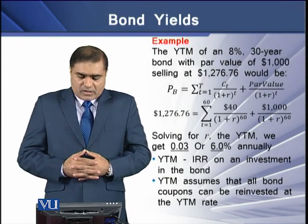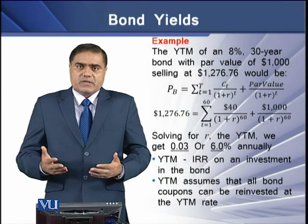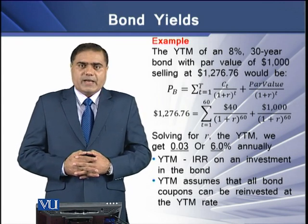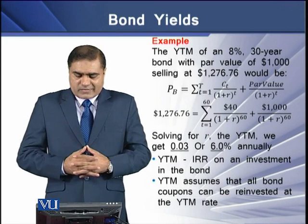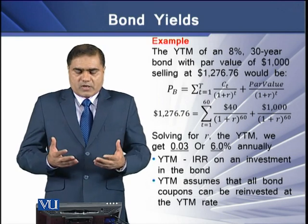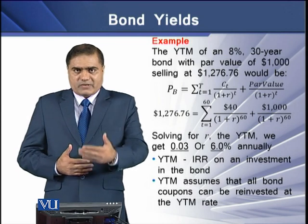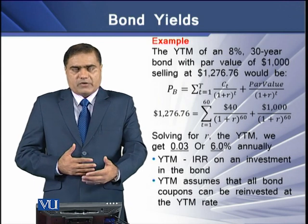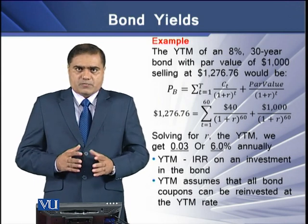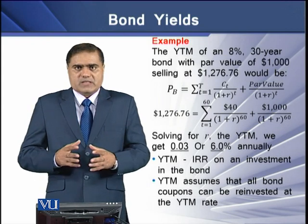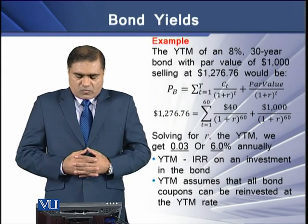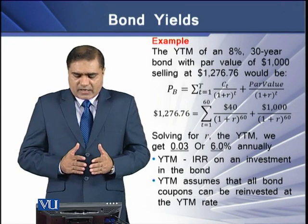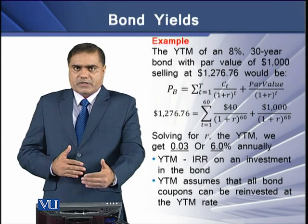For example, the yield to maturity of an 8%, 30-year bond with a par value of $1,000 selling at $1,276.76 — putting these values into the bond valuation formula and solving for R, the YTM we get is 0.03, or 6% annually. We can see that the YTM is basically the IRR on the investment made in this particular bond.